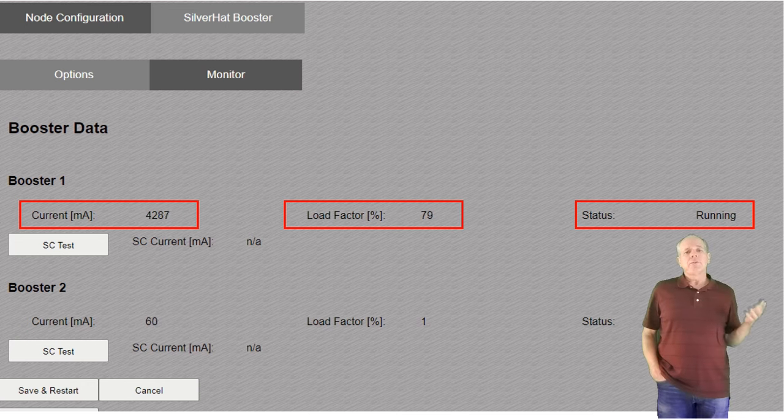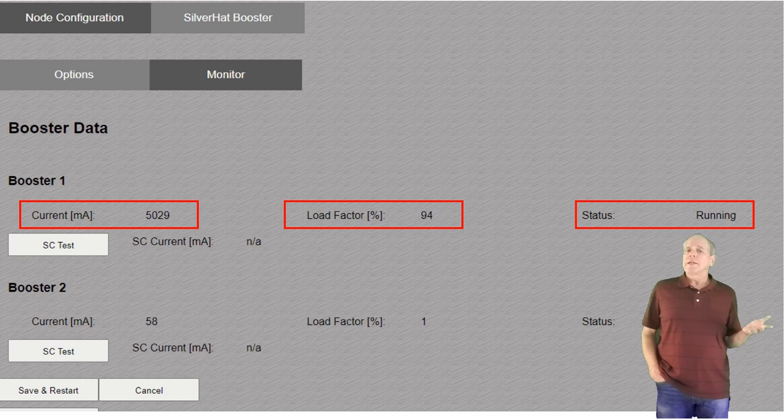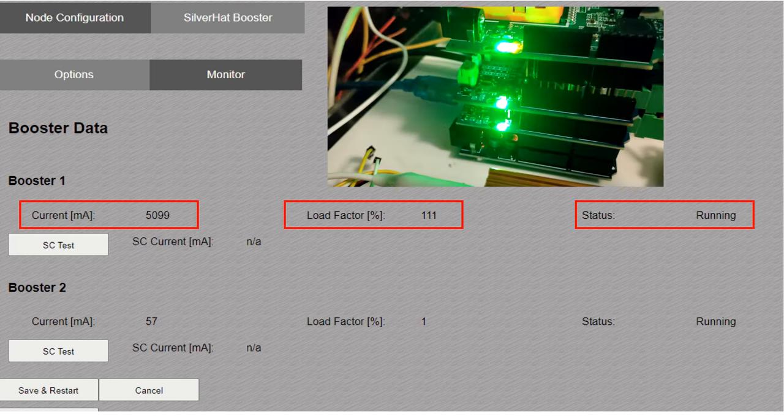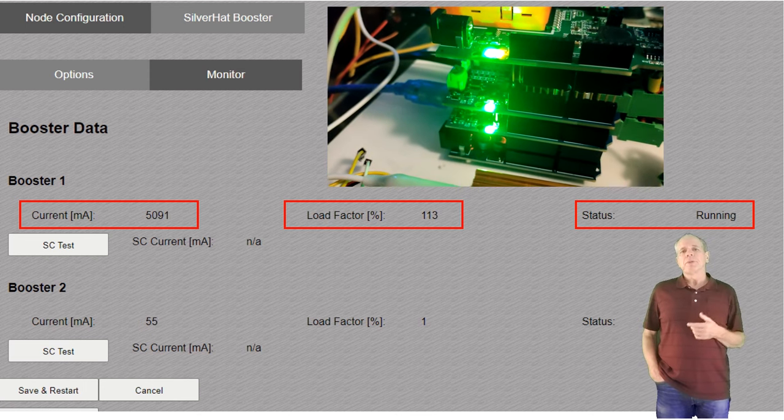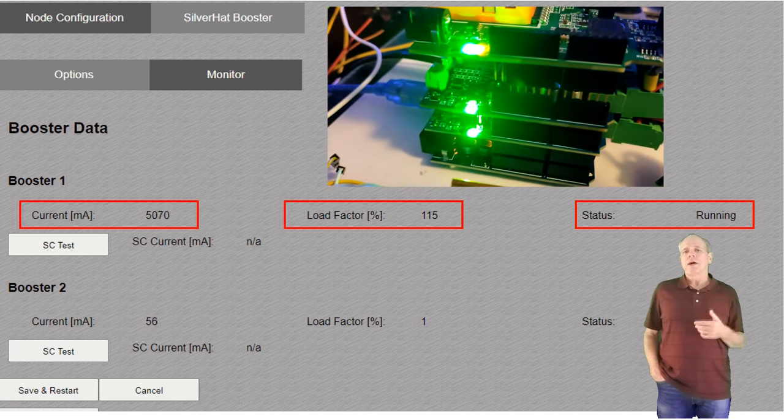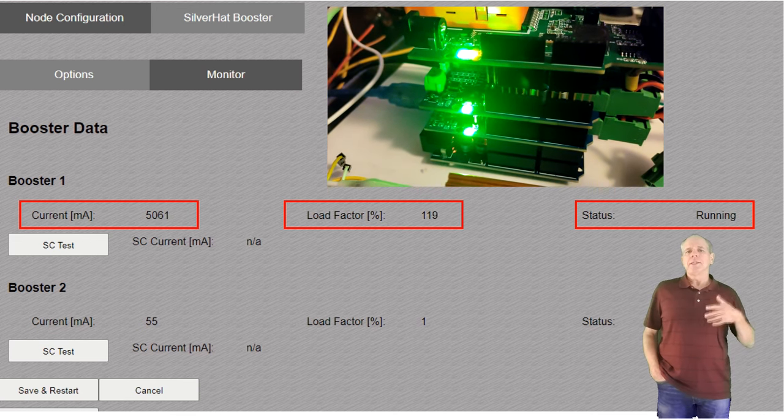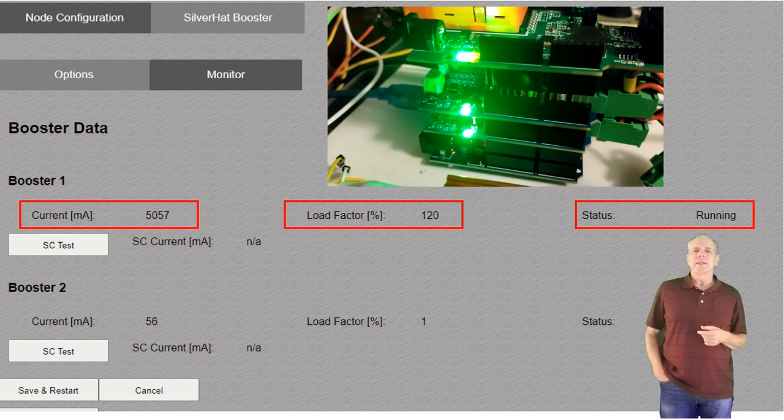Now, let's bring the current up to 5A, which should result in a 125% overload, therefore reach the overload protection point. If 120% is reached, the booster shuts down and cools off, down to 60%, then restarts once again, as it is configured for automatic reset.